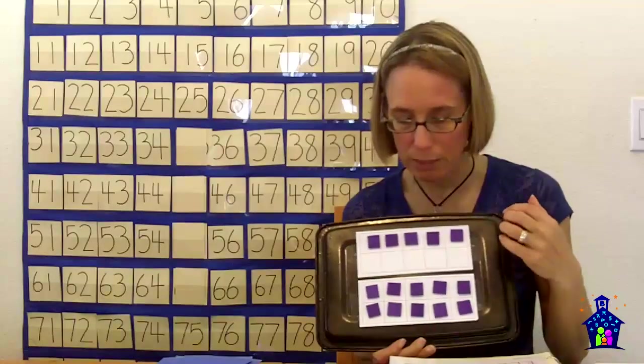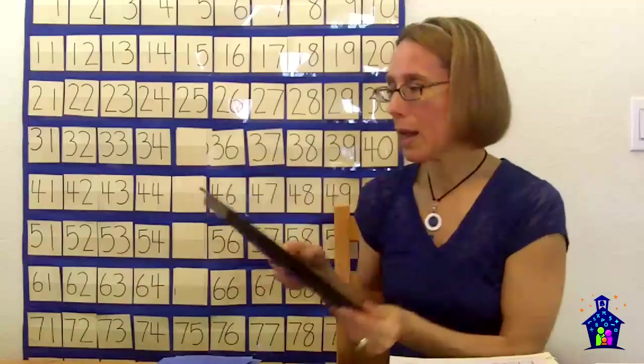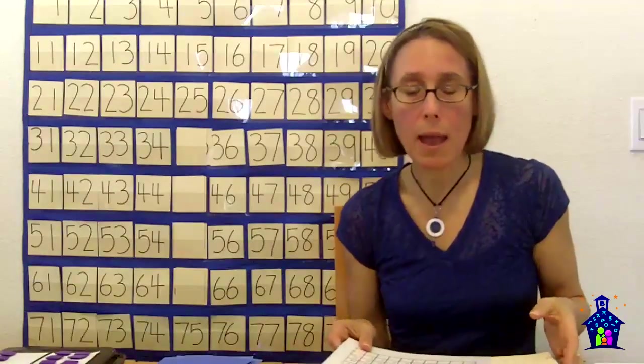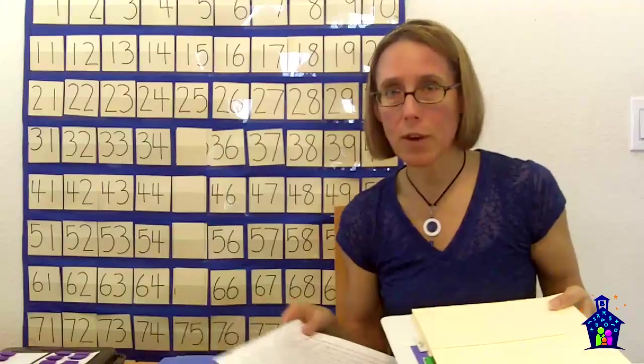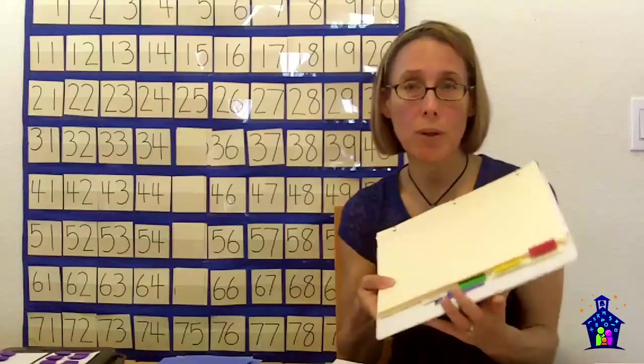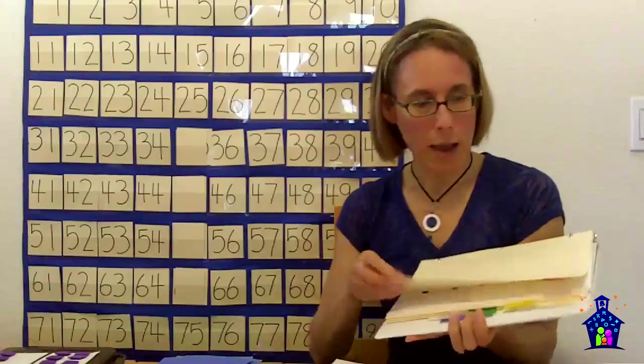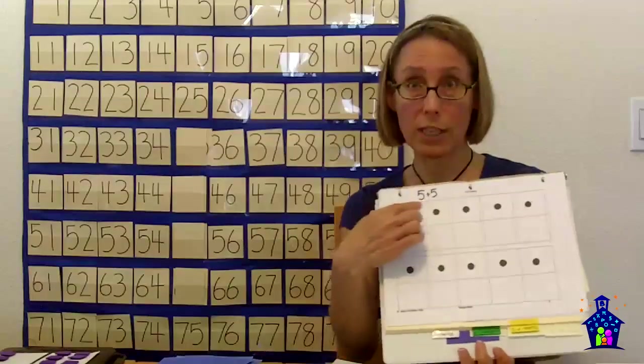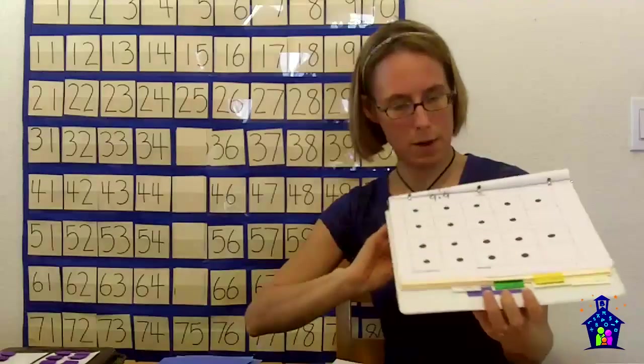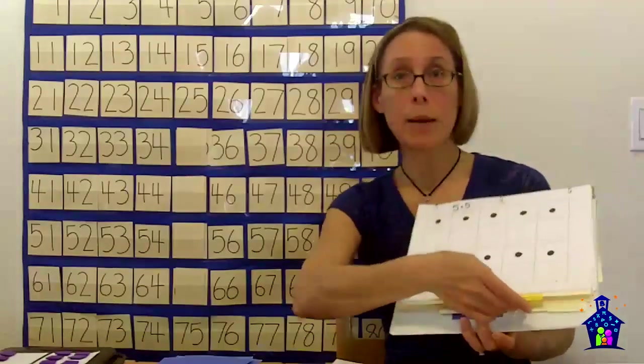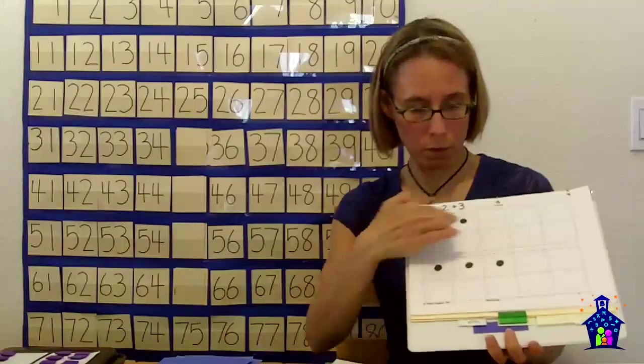I have a binder set up with these ten frames, and I actually have the PDF versions of these ten frames on our website at www.familymathnight.com under the math resources section. So if you want to go there and print them out, you'll have them too. Basically in my binder, I have created the doubles. Here are all of my doubles, and I actually have the expressions right up at the top there. So five plus five, nine plus nine, and so forth.